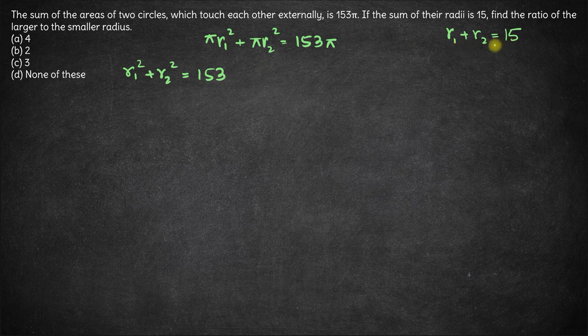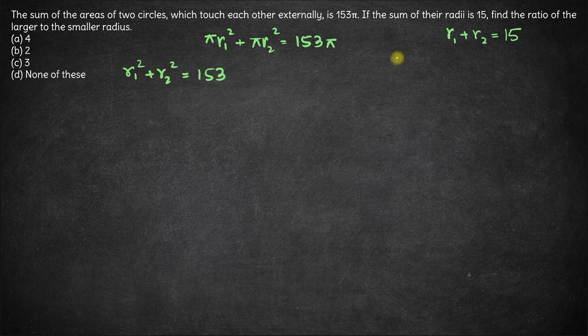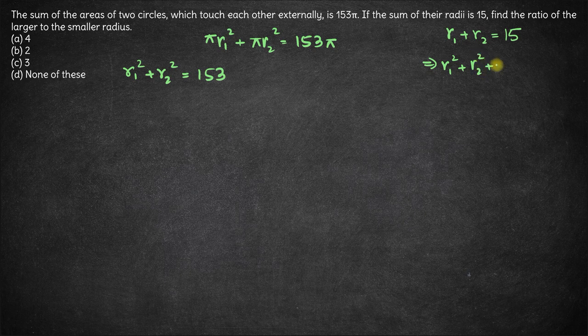Also, we have r1 plus r2 is 15. Since we have squares here, let's square both these sides. So we will have r1² plus r2² plus twice of r1 into r2 is 15 squared, which is 225.